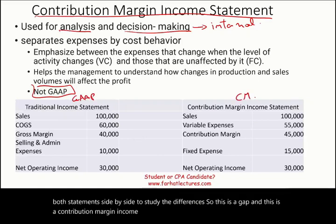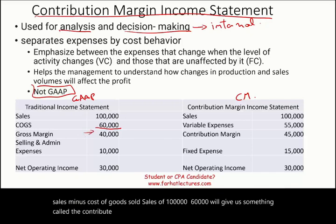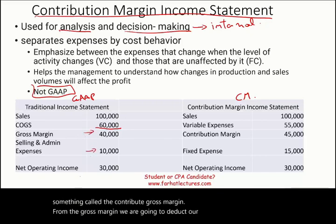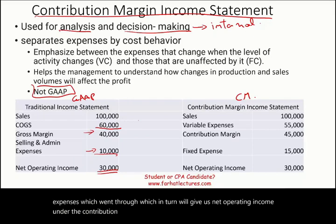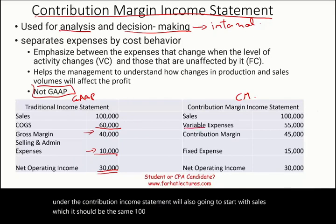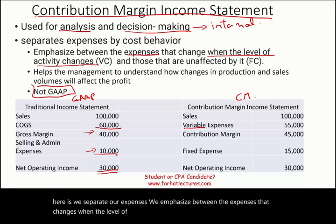Let's take a look at GAAP first. We have sales minus cost of goods sold — sales of $100,000 minus $60,000 — which gives us the gross margin. From the gross margin, we deduct selling and administrative expenses, which gives us net operating income. Under the contribution margin income statement, we also start with sales — the same $100,000 — minus variable expenses. Here we separate expenses, emphasizing those that change when the level of activity changes and those that don't.